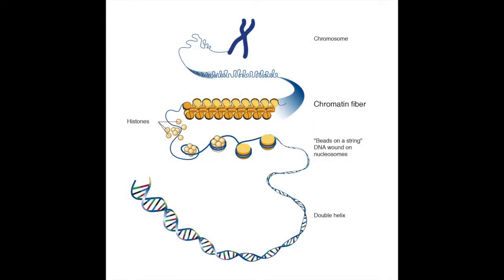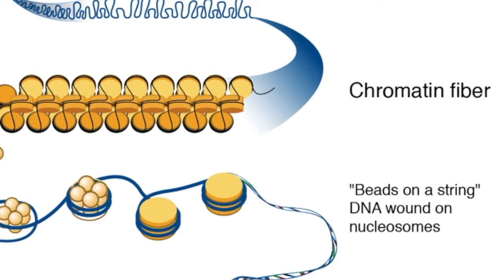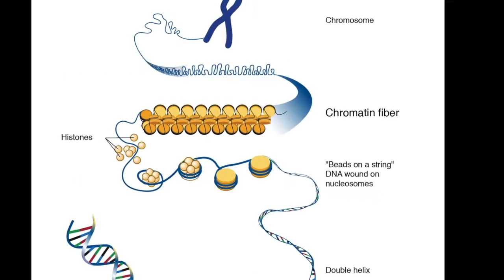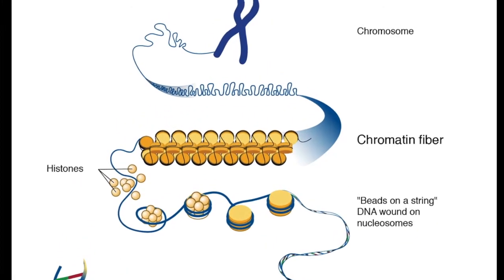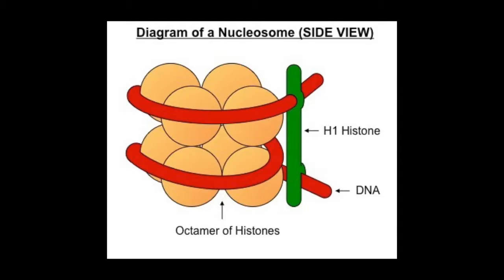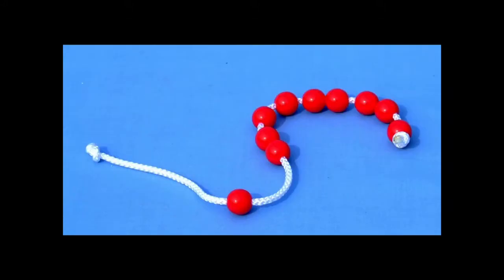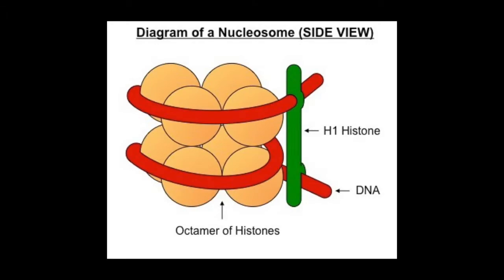The structure of DNA in all of your cells exists as a condensed form called chromatin that enables it to fit in the nucleus. DNA wraps twice around a histone octamer in a structure called a nucleosome, which looks like beads on a string. The H1 histone is the linker of the nucleosome, which stabilizes the chromatin fiber.